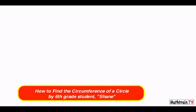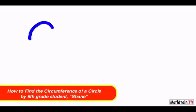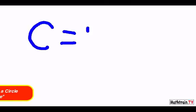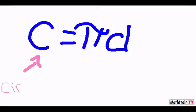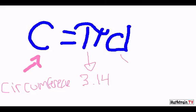To find the circumference of a circle, you use the equation C equals pi D. The C stands for circumference, the pi is equal to 3.14, and the D is diameter.